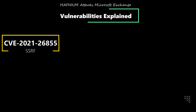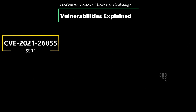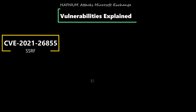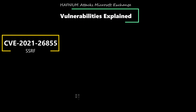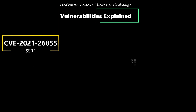CVE-2021-26855 is a server-side request forgery vulnerability, also called SSRF. An attacker can send specially crafted HTTP requests to the server and get authenticated as the Exchange server itself.